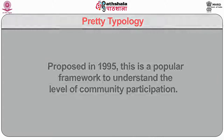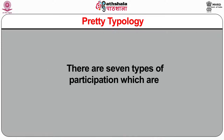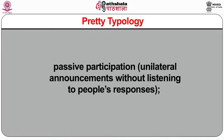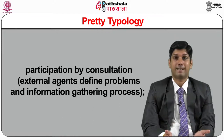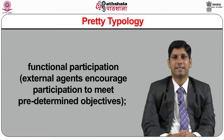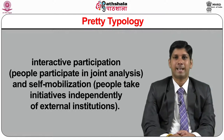The next one is the Preti typology proposed in the year 1995. This is a popular framework to understand the level of community participation. There are seven types of participation: manipulative participation, which pretends with nominated representatives having no legitimacy of power; passive participation, which involves unilateral announcements without listening to people's responses; participation by consultation, where external agents define problems and the information-gathering process; participation for material incentives, where people participate by contributing resources in return for material incentives; functional participation, where external agents encourage participation to meet predetermined objectives; interactive participation, where people participate in joint analysis; and self-mobilization, where people take initiatives independently of external institutions.